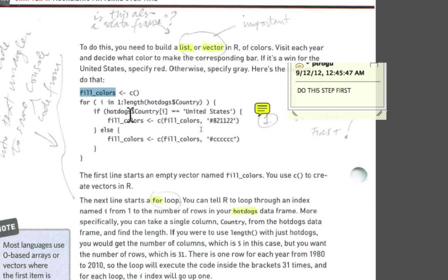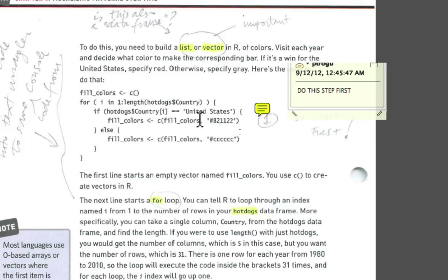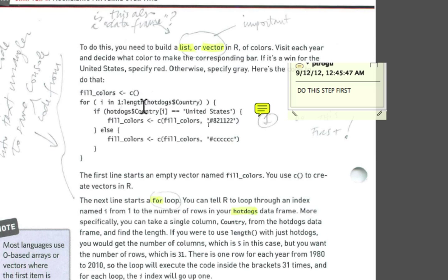I'm not going to go into exactly how it works now, but if you follow the syntax — and there's a lot of it — you should be able to take this piece of code and do a different variable. You might want Germany colored, for example. All you'd have to do is change the name of the country. Remember, you have to copy the name exactly as it appears in the database.